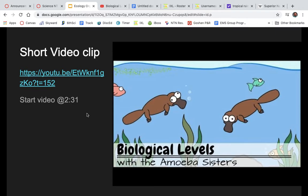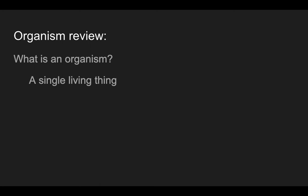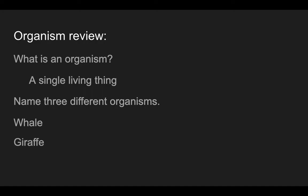Alright, so there was a short video and that's kind of what we're going through today. Organism review — what is an organism? An organism is a single living thing. Name three different organisms: a whale would be an organism, a giraffe is an organism, grass is an organism, or a tomato plant. Those would all individually be an organism.